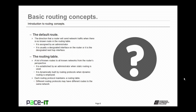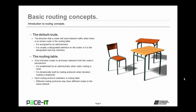The default route is the direction that a router will send network traffic when there is no known route in the routing table. The default route is assigned by an administrator. It is usually a designated interface on the router, or it is the next designated next hop interface. The routing table is a list of known routes to all known networks from the router's perspective. It is established by an administrator when static routing is used, and dynamically built by routing protocols when dynamic routing is employed. Each routing protocol maintains its own routing table, and different routing protocols may have different routes to the same network.